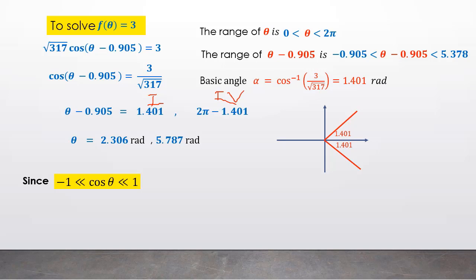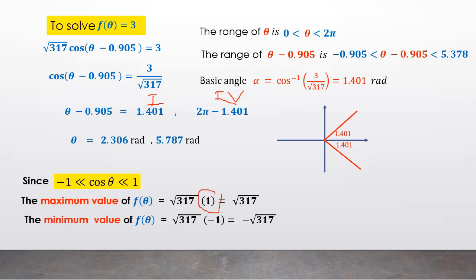Since cosine has a minimum of -1 and maximum of 1, for the expression √317 cos(θ - 0.905), the maximum value of f(θ) is √317 when cos = 1, and the minimum value of f(θ) is -√317 when cos = -1.